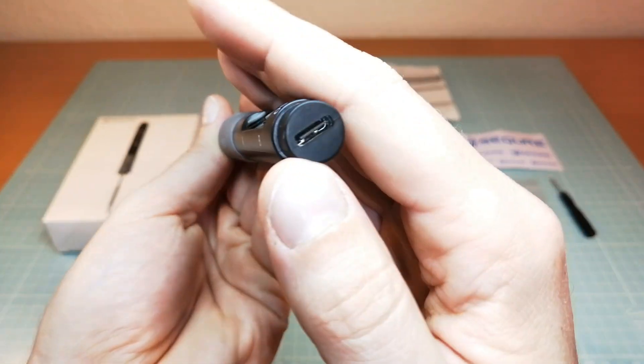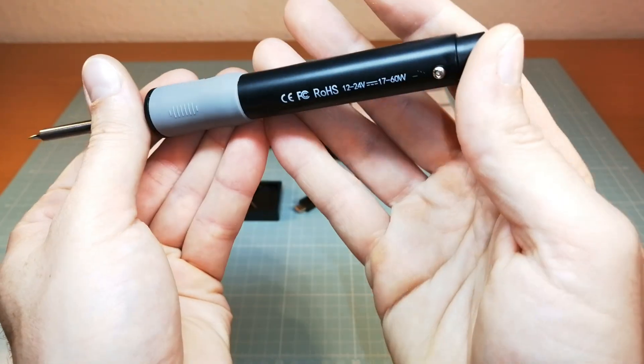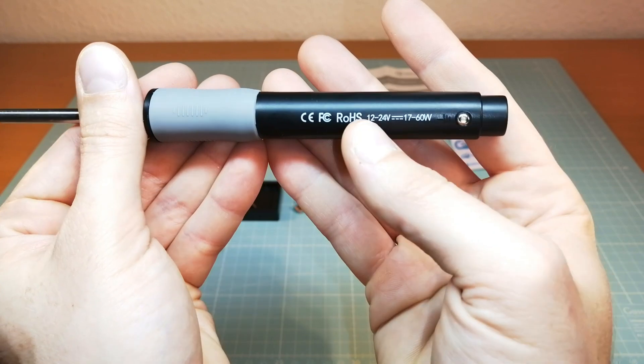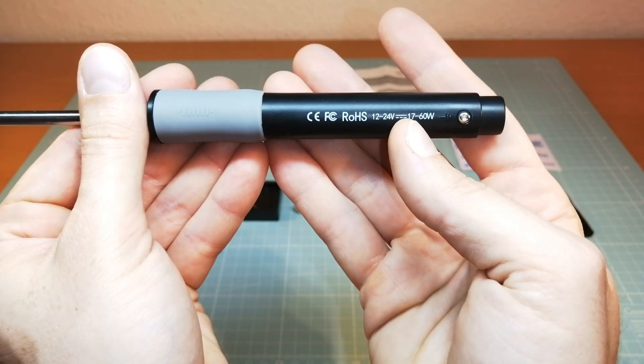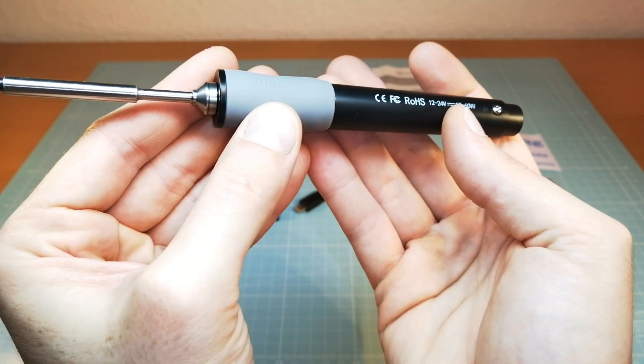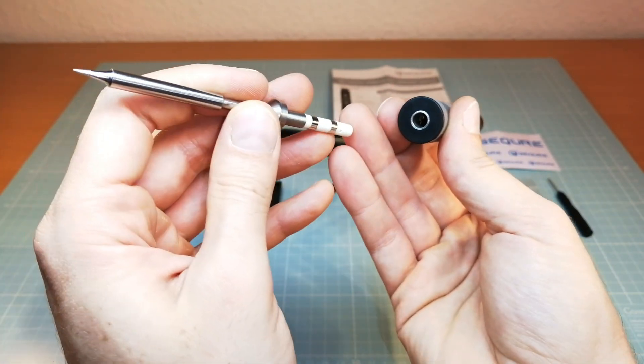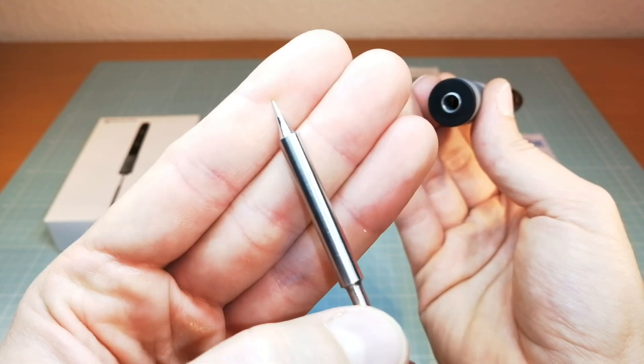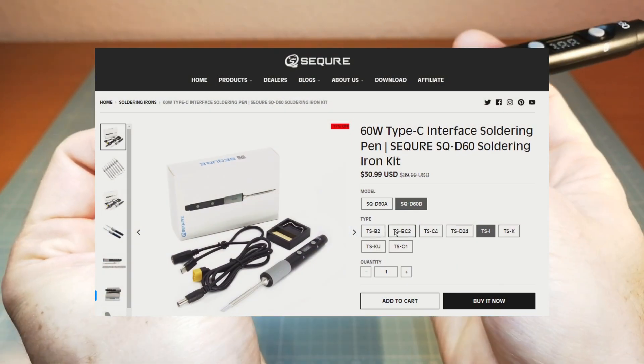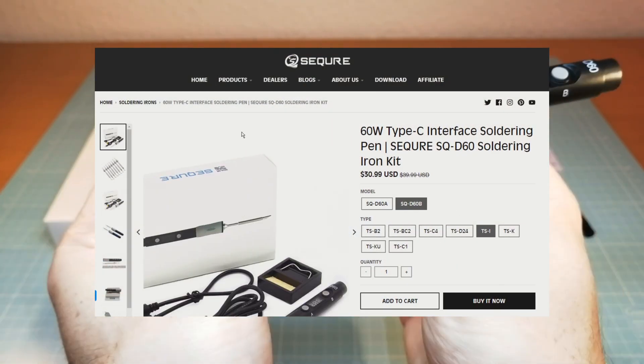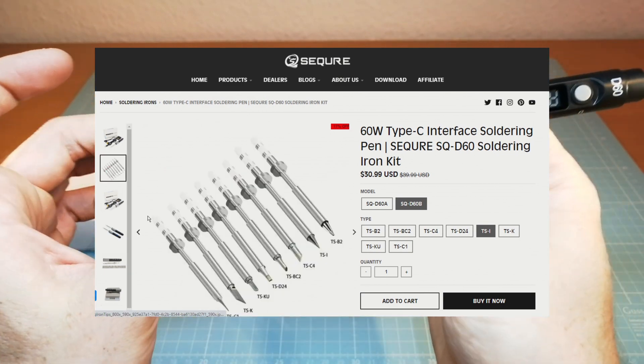At the back of the D60B solder pen we have the USB-C connector. The soldering iron tip is replaceable. My iron is a type TS1 soldering iron tip but you are free to choose your favorite one while placing your order. You can select between different types of iron tips for your D60 and you can even buy additional ones.